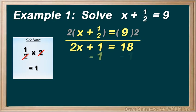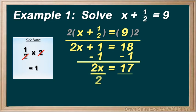So we can subtract 1 from both sides, leaving 2x on the left and 17 on the right, and then we divide both sides by 2, and we end up with x equals 17 over 2. Or, if they wanted it in decimal form, we could answer it as 8.5. Either is good.